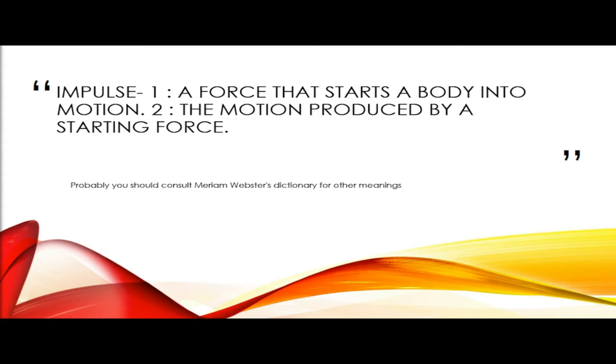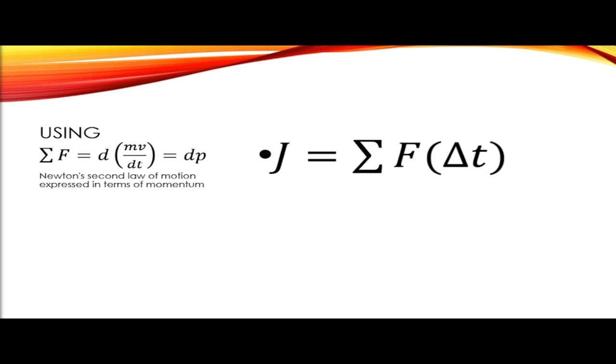Therefore, we can relate it to the momentum of the particle. Since a change in momentum of an object changes its state of motion, we can rewrite impulse J as equal to the sum of all the forces times delta t. But this quantity can also be written in terms of momentum.